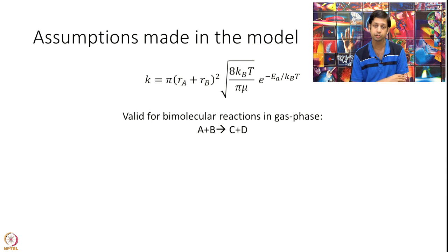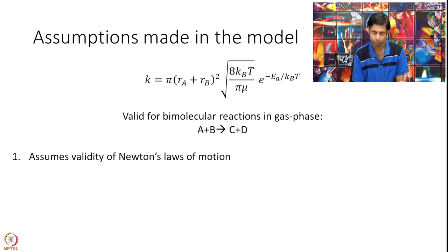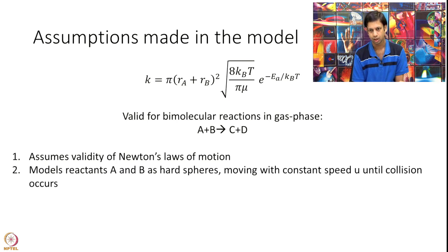It assumes validity of Newton's laws of motion. We model reactants A and B as hard spheres moving with constant speed u until collision occurs. Essentially there is no interaction, no potential energy. These particles are not charged, there is no Coulomb force, no Leonard Jones force, no dispersion force. It's a very simple minded model - two spheres moving at constant speed until collision happens.